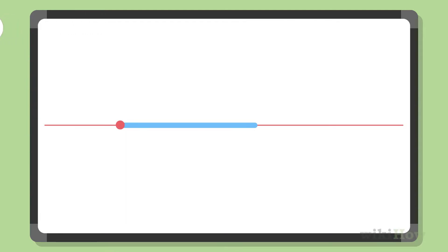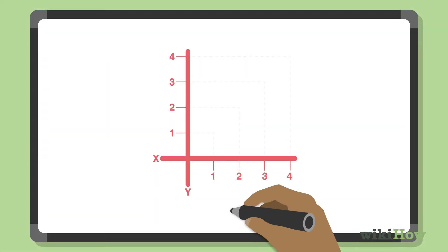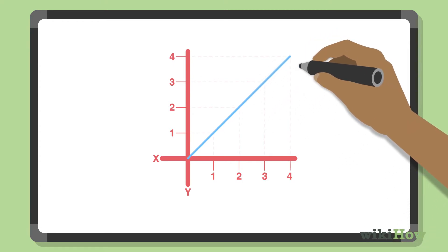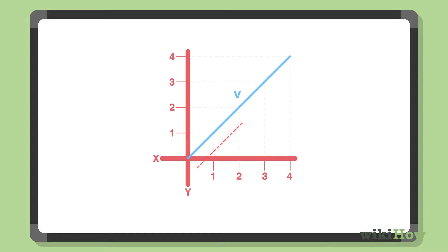A vector is an object that has both magnitude, sometimes called size or length, and direction. Vectors are usually represented by drawing an arrow, where the direction of the arrow represents the direction of the vector and the length of the arrow represents its magnitude.